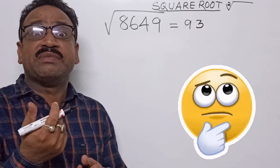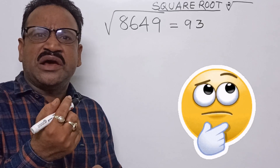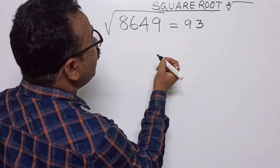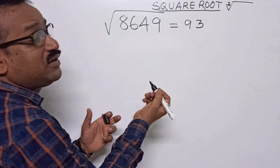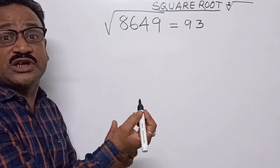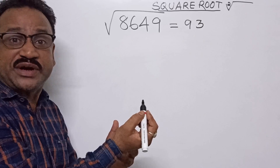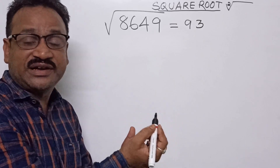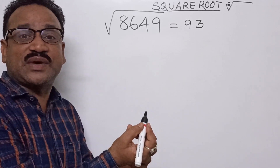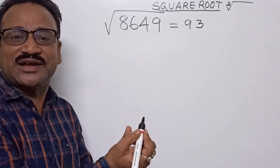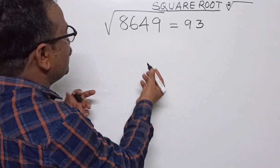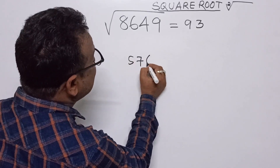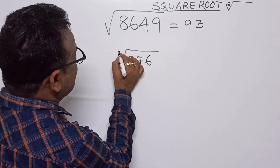Let me show you a shortcut trick. So now we know the squares: 1²=1, 2²=4, 3²=9, 4²=16, 5²=25, 6²=36, 7²=49, 8²=64, 9²=81, and 10²=100. Now we will apply this.